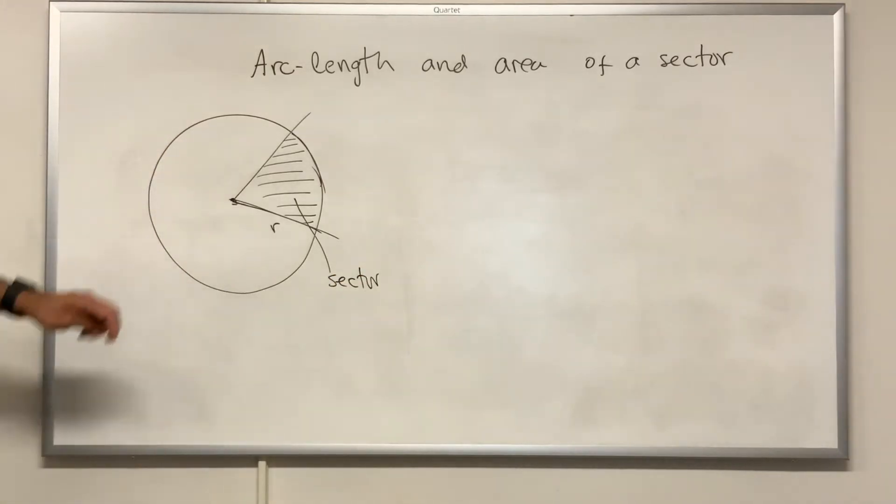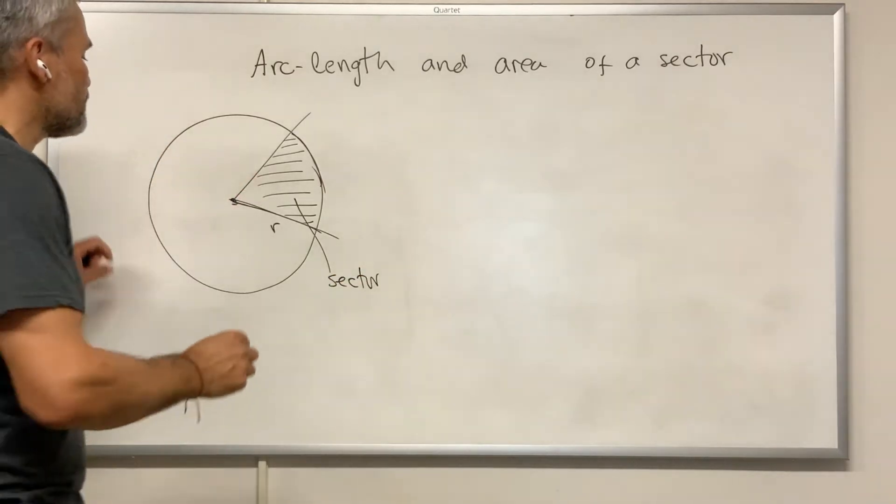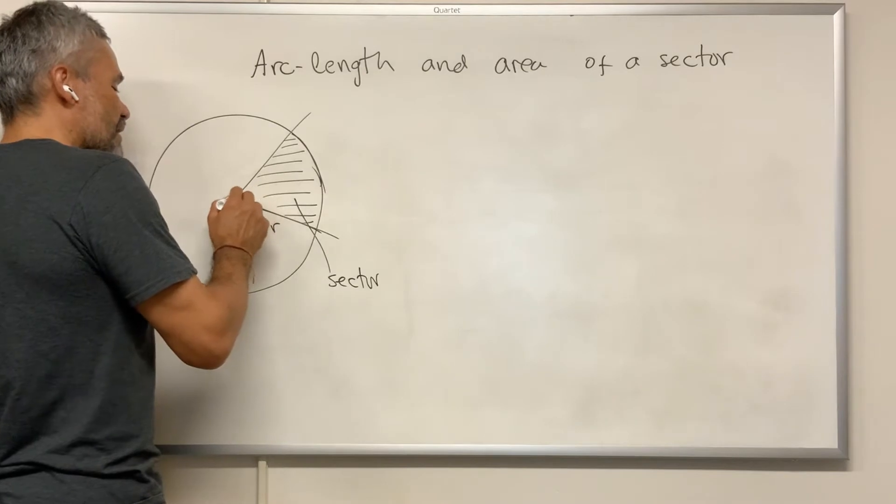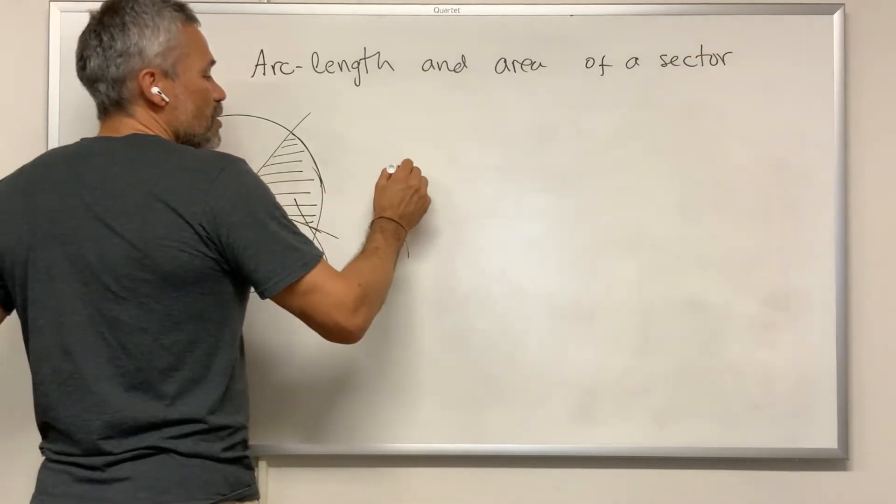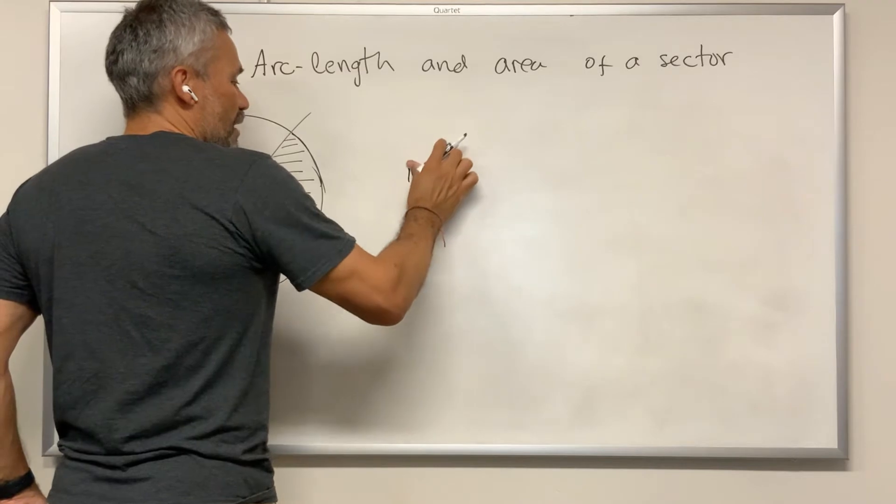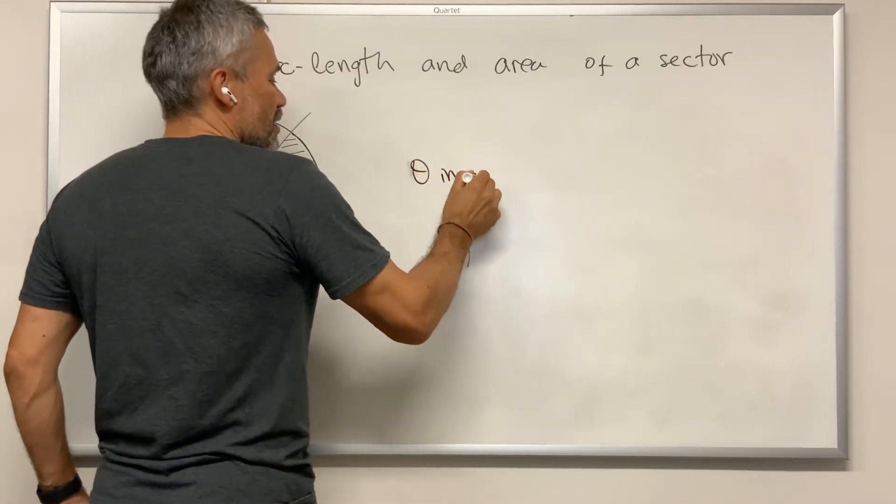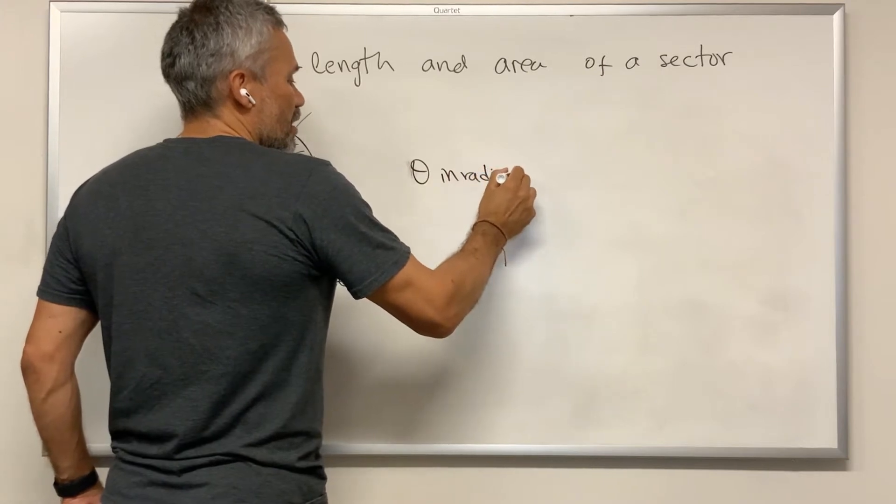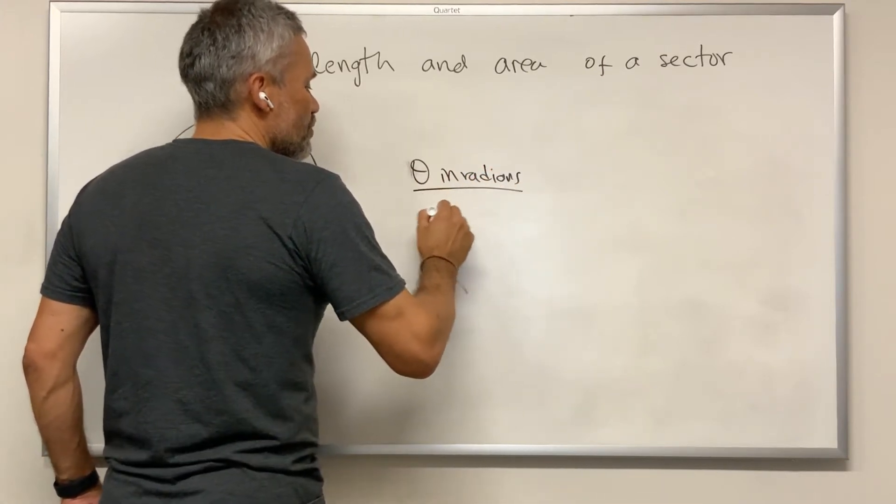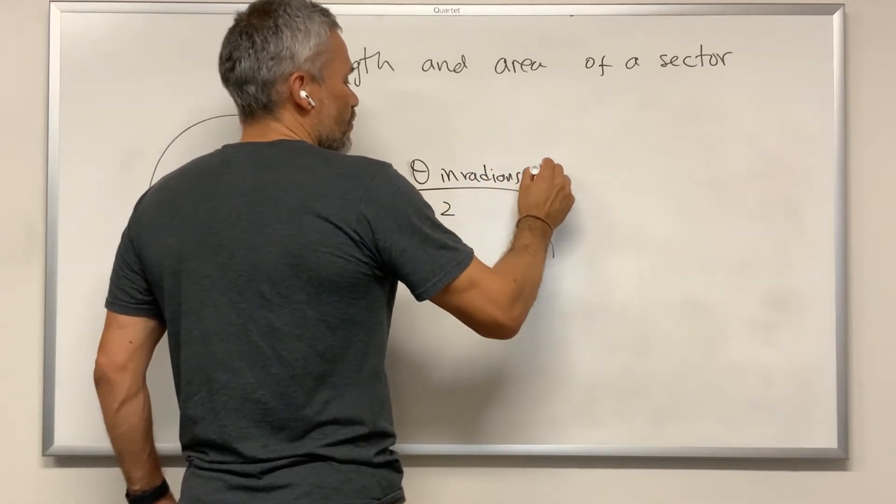Let's find the area of that sector. We have that the area is equal to the angle in radians divided by 2 times radius squared.